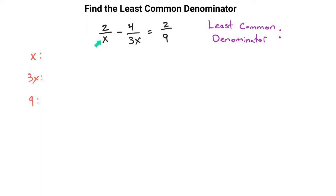So you've got an x, you've got a 3x, and you've got a 9, and you want to list out all of the multiples of them. So you start with just the original, and then you multiply. So x, 2x, 3x.